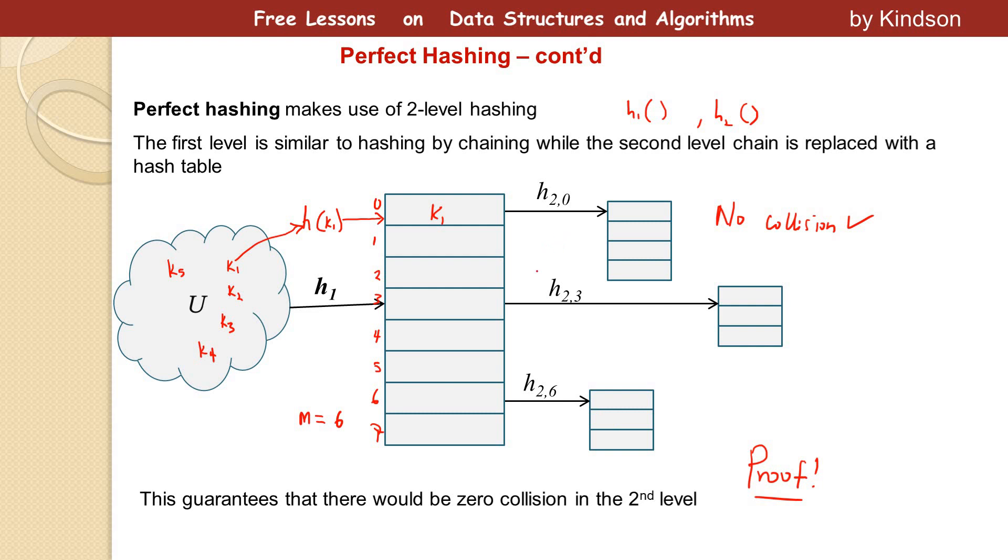In the next tutorial, tutorial 7, we are going to prove this. I want you to understand exactly what perfect hashing is about, and then we'll go to the analytical part in the next tutorial to prove that there will be zero collision for perfect hashing in level 2.